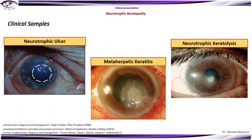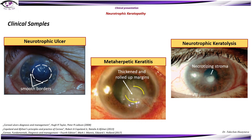As mentioned, neurotrophic ulcer is characterized with round or oval ulcers with grey, thickened, and rolled-up margins. In this photo we can see a central ulcer with smooth borders, and in another we can see thickened and rolled-up margins. Neurotrophic keratitis can also be called metaherpetic keratitis. This is a case of neurotrophic keratolysis with necrotizing stroma, and the patient here also has advancing neovascularization.